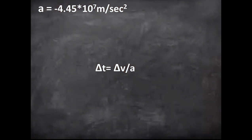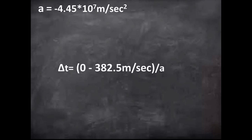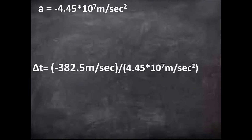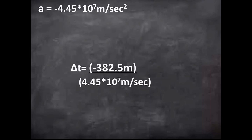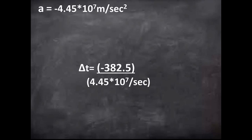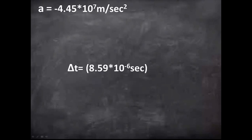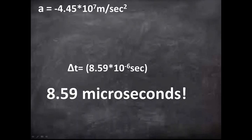Delta t is just change in time, but delta v is change in velocity, which is simply the final velocity of zero minus the initial velocity. This is just negative 382.5 meters per second. So let's insert the value for acceleration, and then we divide. Seconds cancels, at least one of them. Now we can also cancel all meters, and dividing the numbers we get this. Delta t equals 8.59 times 10 to the negative 6 seconds, or 8.59 microseconds. Put that in the corner, and then I'll introduce you to our last equation.